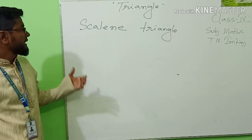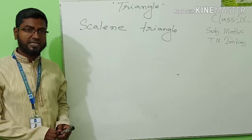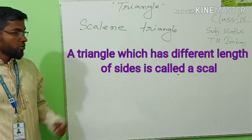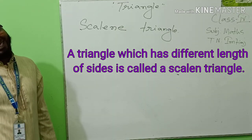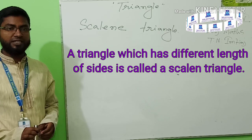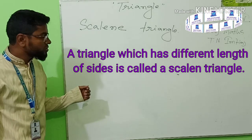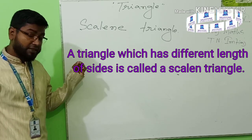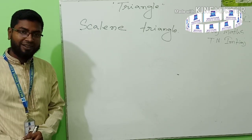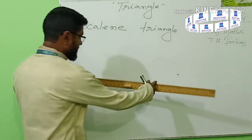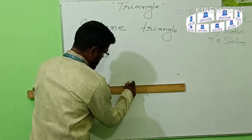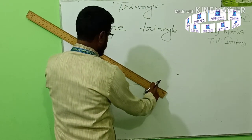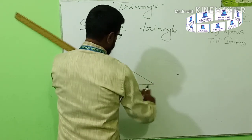Now we will learn the scalene triangle. 'Scalene' means no equal sides — different length. So the definition will be: a triangle which has different lengths of sides is called a scalene triangle. To draw it, just draw three line segments all of different lengths and connect them.